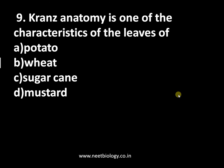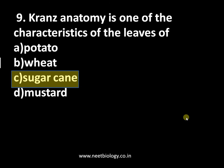Question number nine: Kranz anatomy is a characteristic of the leaves of — option A: potato, B: wheat, C: sugarcane, D: mustard. The answer is sugarcane. Kranz anatomy is seen in C4 plants, and in this list, the C4 plant is sugarcane. You must learn examples of C3 and C4 plants — refer to our video on the difference between C3 and C4 for more details.